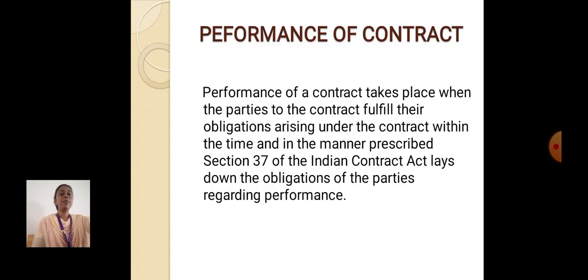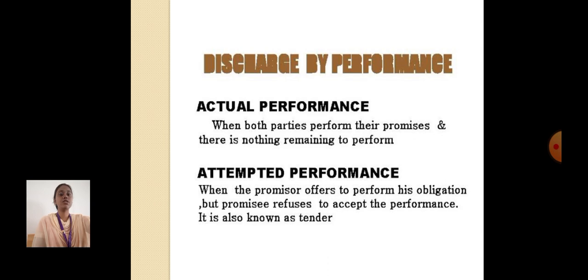Performance of Contract: Performance of a contract takes place where the parties to the contract fulfill their obligations arising under the contract. Section 37 of the Indian Contract Act lays down the obligation of the parties regarding performance. Actual performance occurs when both parties perform their promises and there is nothing remaining to perform. Attempted performance, also called tender, occurs when the promisor offers to perform his obligation but the promisee refuses to accept the performance.